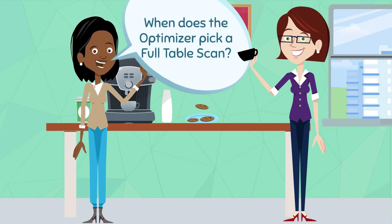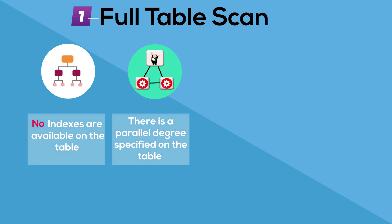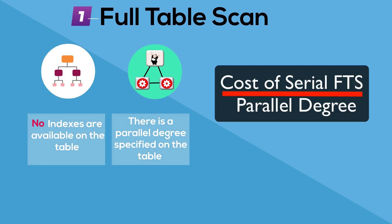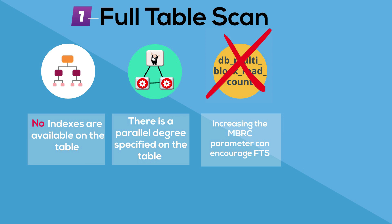So when does the optimizer pick a full table scan? The optimizer will select a full table scan if there are no indexes created on the table. It may also select a full table scan if a parallel degree has been specified on the table. Executing a full table scan in parallel can greatly reduce the cost of the scan because the cost is calculated by taking the cost of a serial scan and dividing it by the parallel degree specified on the table. Increasing the database parameter db_multi_block_read_count will also reduce the cost of a full table scan and therefore increase the chances of the optimizer picking it. However, making a change of this sort — where you're changing the default value of a database parameter — is not recommended as it has the potential to impact all SQL statements being executed on the system and may result in a number of sub-optimal execution plans.